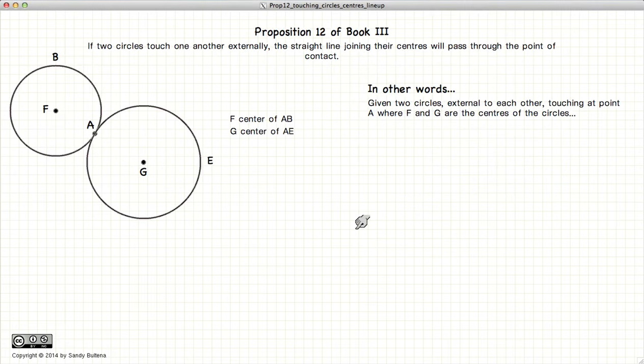This video presentation is on Proposition 12 of Book 3, which states that if we have two circles external to each other that touch at point A, where F is the center of circle B and G is the center of circle E, then if we join the lines F and G, it will cross through point A.